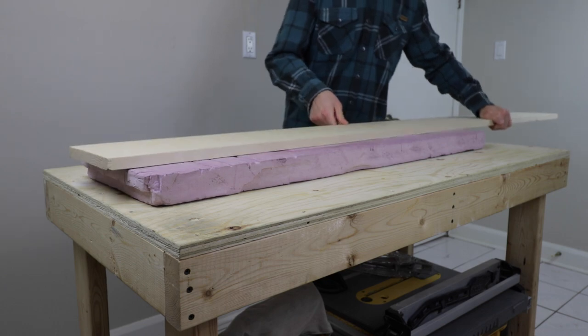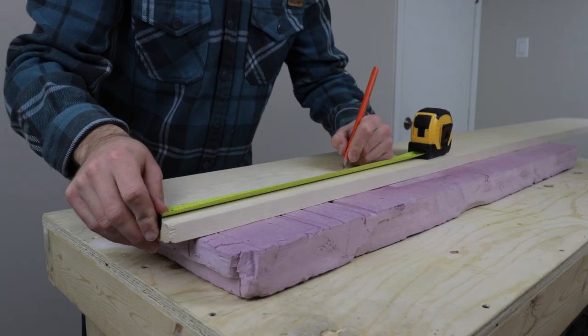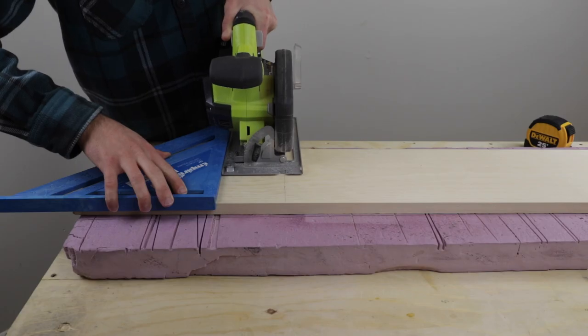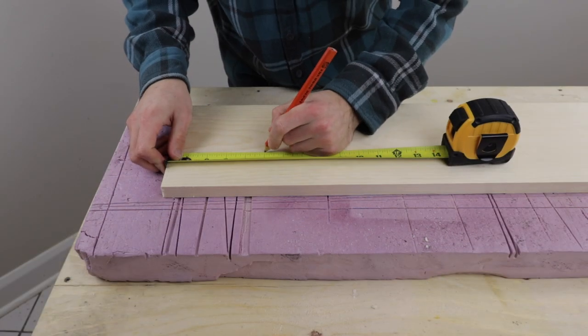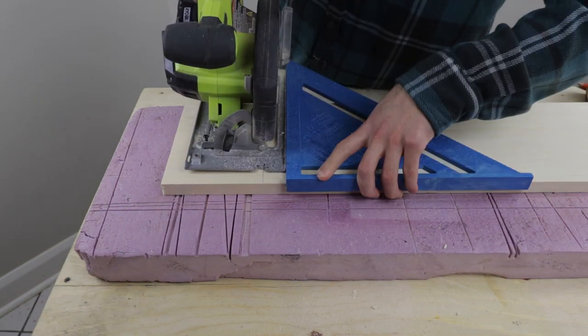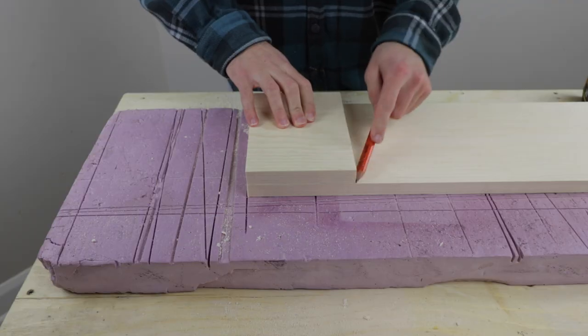I started out with a pine 1x8. I measured and cross-cut my first piece at 12 inches. This would become the base plate. Then I measured and cut out two more pieces at 6 inches wide. These would become the two upper shelves.